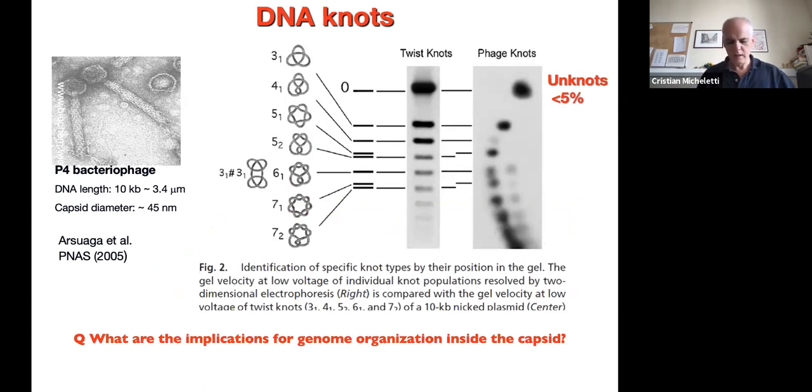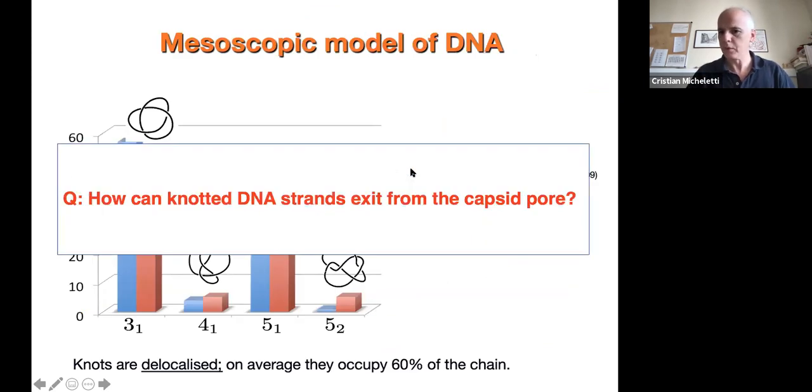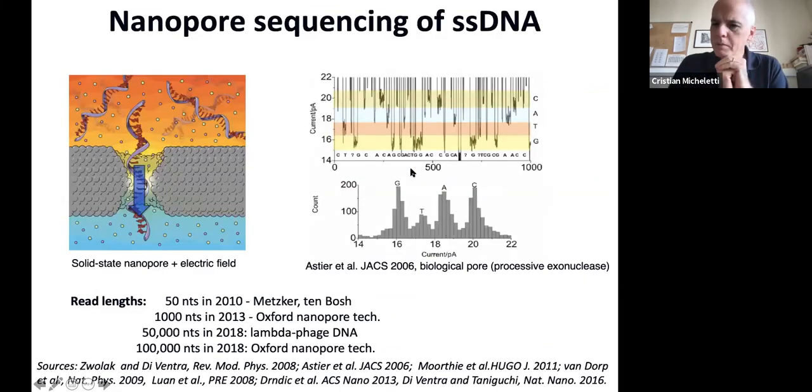Imagine you have a complicated knot, and you want to eject it through a narrow pore. How come the virus can eject it without jamming the pore? If I try to do it with this rope, I'm not able to get it through my fist because there is lots of friction and the knot tightens. How come knotted DNA can be ejected?